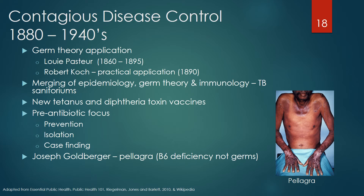The 1920s and 30s saw significant advances not only in the understanding of contagious diseases but also in vitamin and nutrition research.